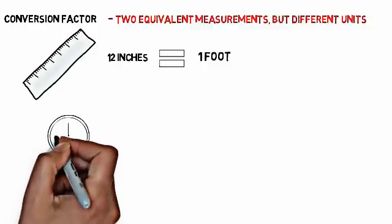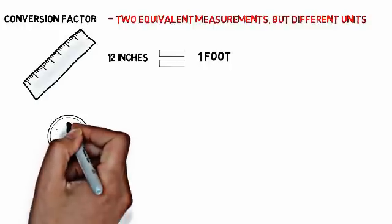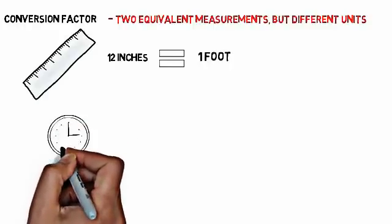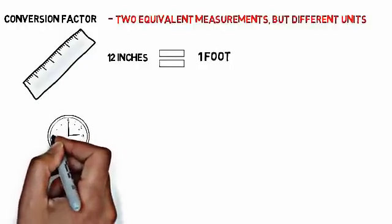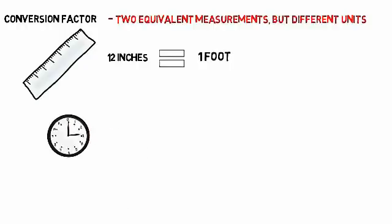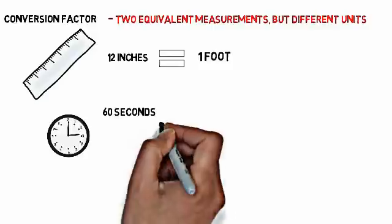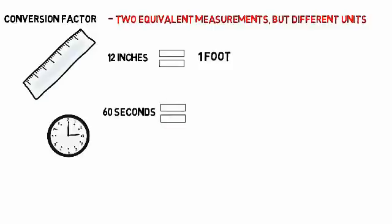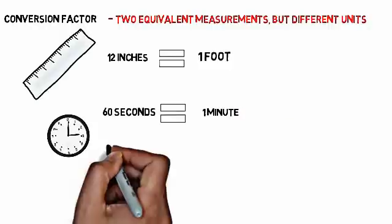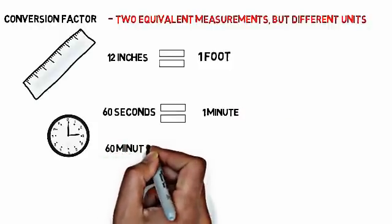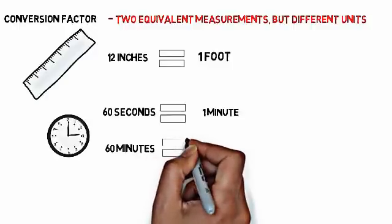Think about time. There are lots of different ways you can measure the same length of time. For instance, you can measure in seconds, minutes, hours, days, years, etc. So these are conversion factors — like 60 seconds equals one minute. Same amount of time, just different units of measure. Or 60 minutes is equivalent to one hour.